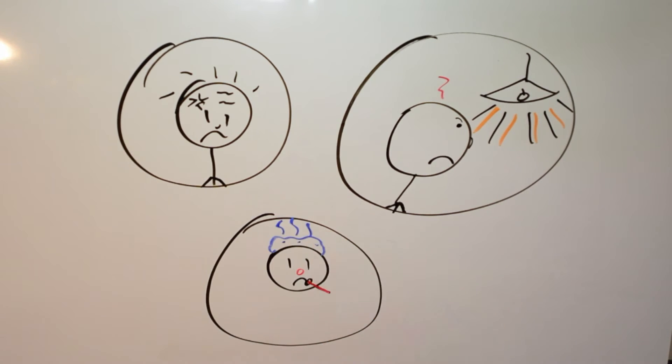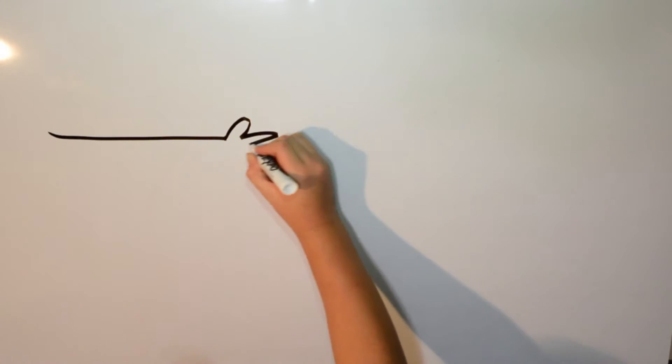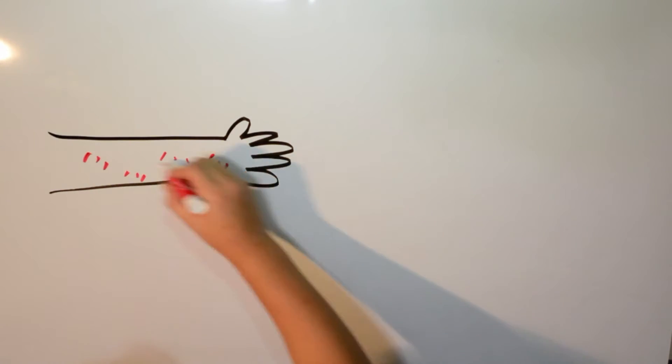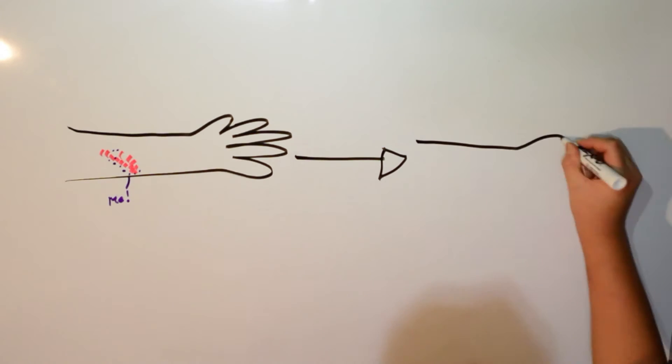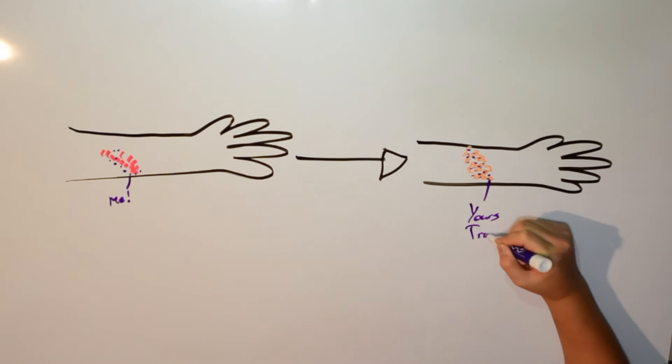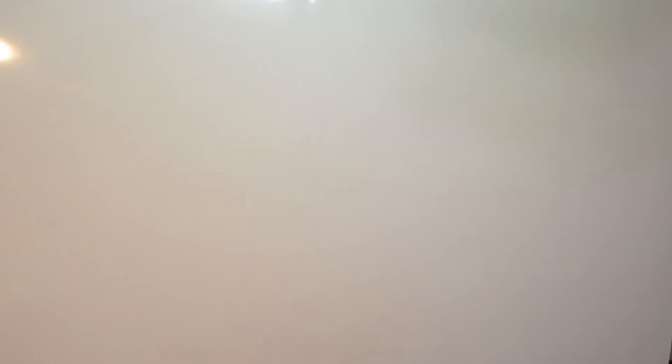Afterwards the human may feel itching, tingling, or pain. Then a band or strip-like area of a rash pops up and turns into blisters. This has been described as extremely painful.